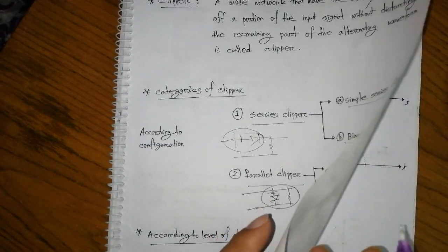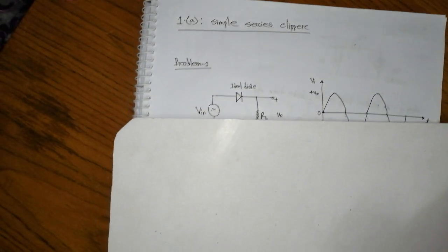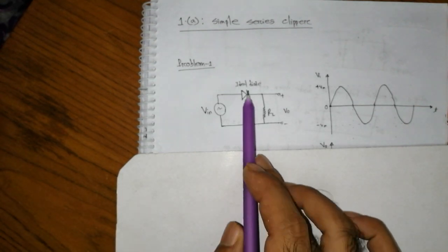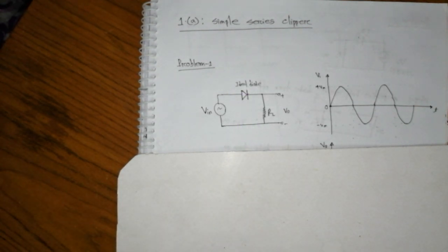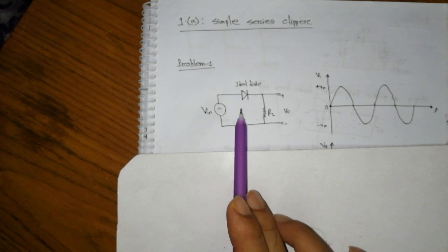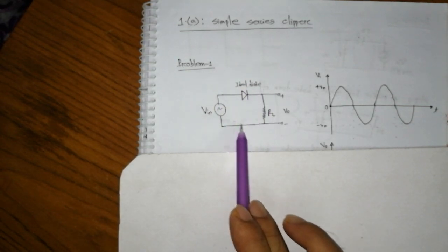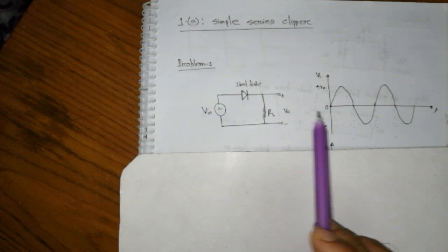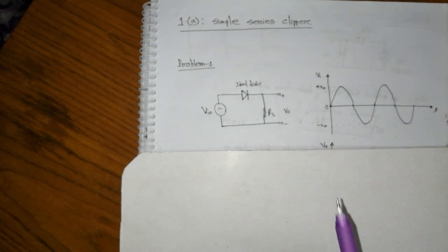Now let's start with the simple clipper — specifically the ideal simple clipper. The clipper circuit has a source input signal. The signal has a positive maximum Vm and a negative maximum.